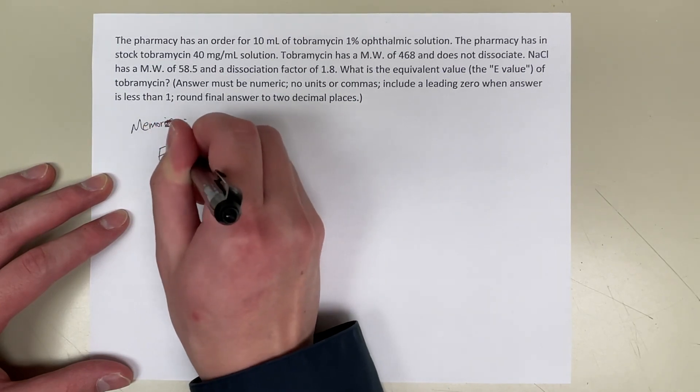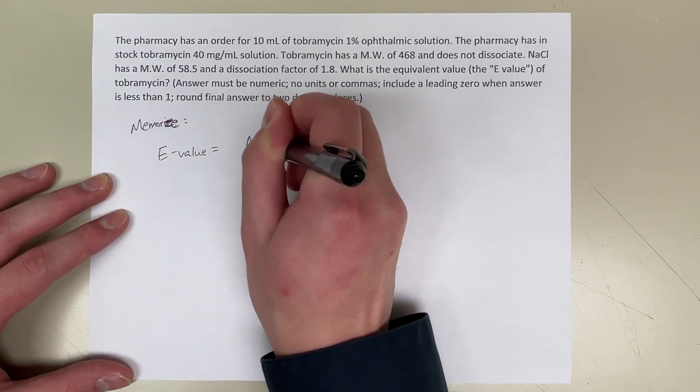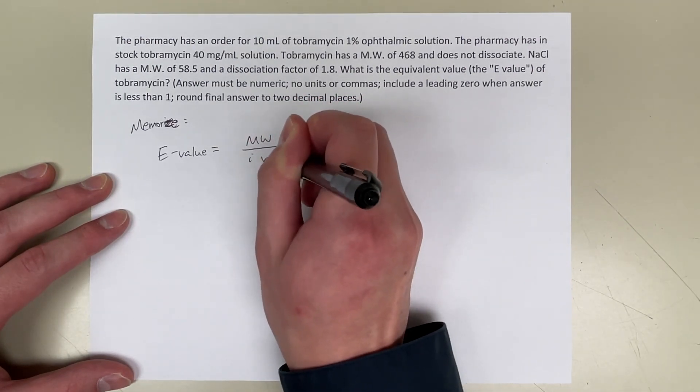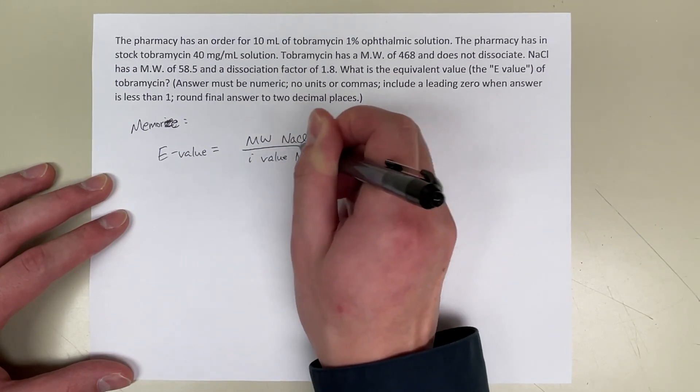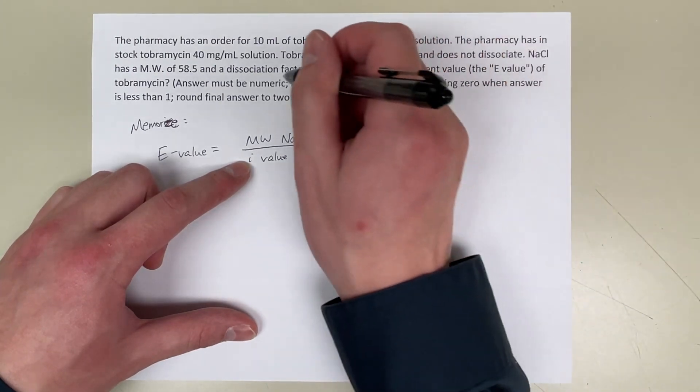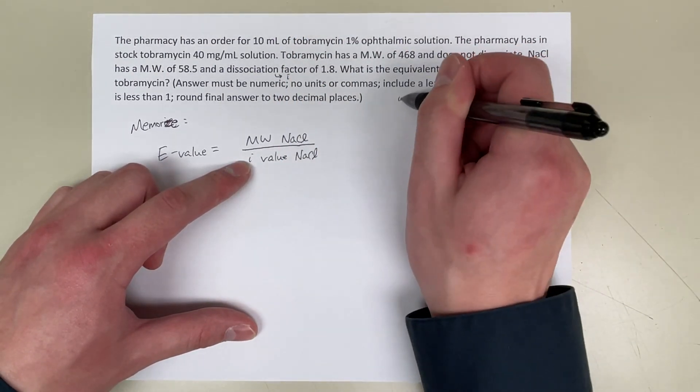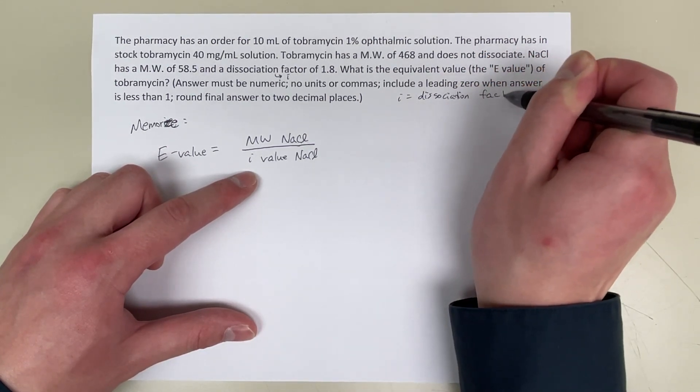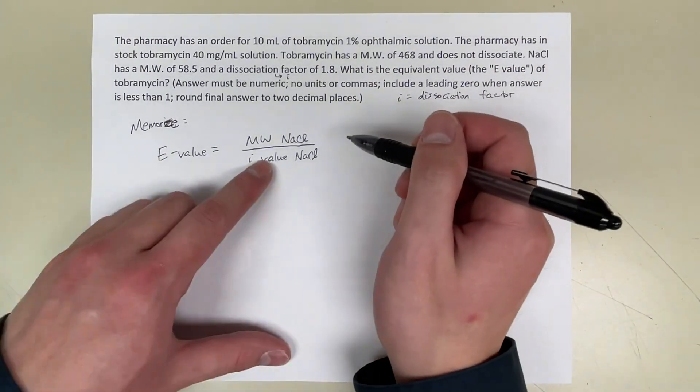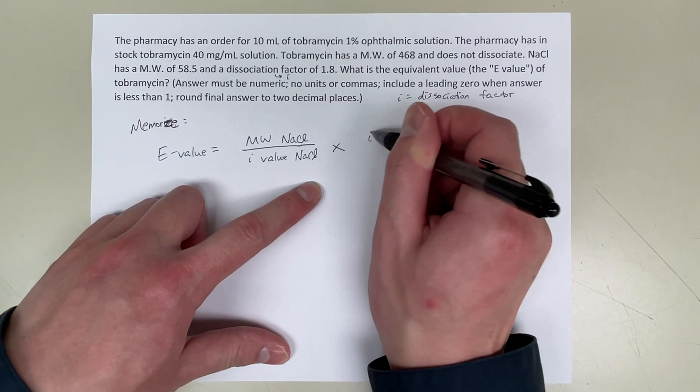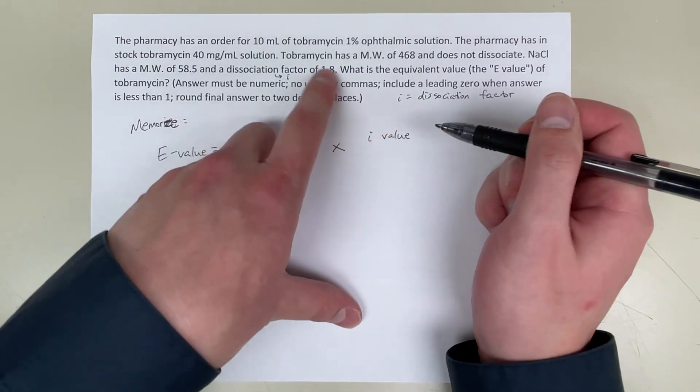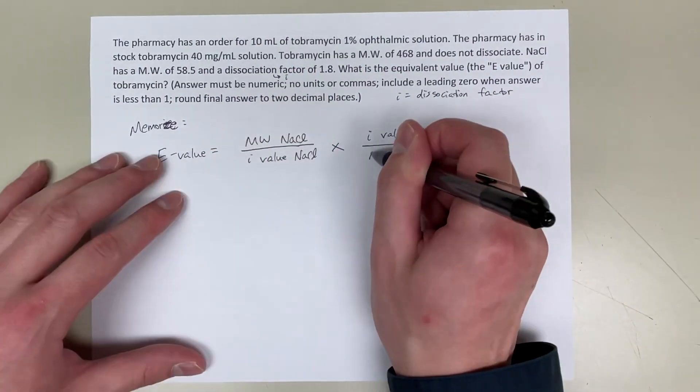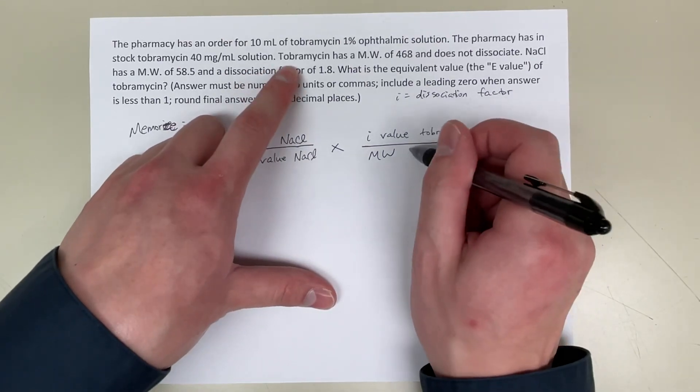The E value equals the molecular weight of sodium chloride divided by the I value of sodium chloride. I stands for the dissociation factor. Then you multiply that by the I value of whatever drug is in the question, in this case topomycin, divided by the molecular weight of whatever the drug is in the question, in this case topomycin.